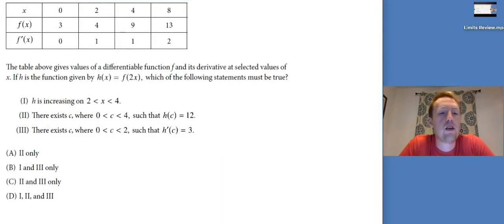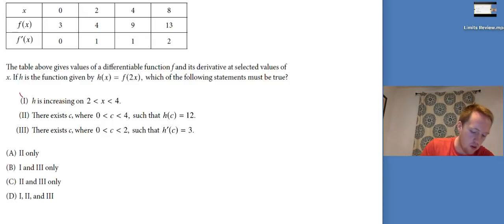Just like with our intermediate value theorem, we have to say, you know, the function is continuous and differentiable. That's how we know it. We're also going to show the math work, but we have to show it that way. We have to justify it. First thing, table above gives values of a differentiable function F and its derivatives at selected values of X. If H is the function H of X equals F of 2X, which of the following statements must be true? One, H is increasing on 2 to 4. Well, if H is increasing, then that would mean that F is increasing. But I don't know what happens in between these X values. They'd like to do this a lot. They like to give you a table of values and trick you with it. But you only know four different X values. There are literally an infinite number of X values where so much else could happen. Don't trust things like that. There's no way you could know that.